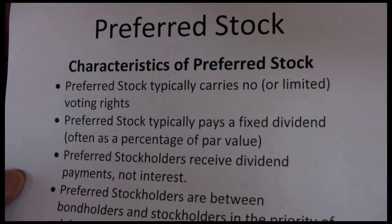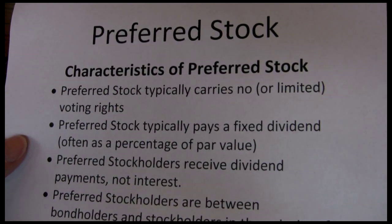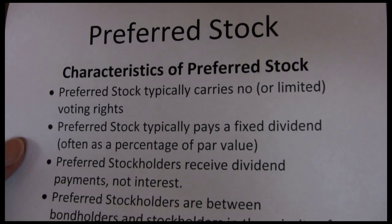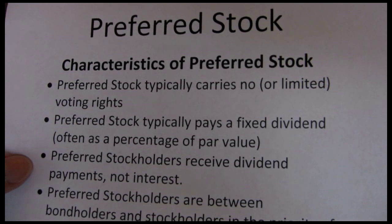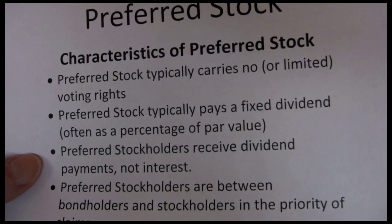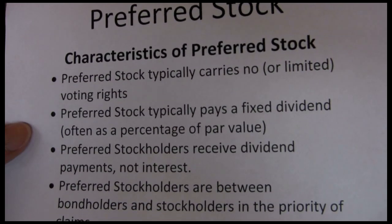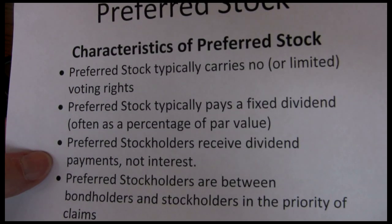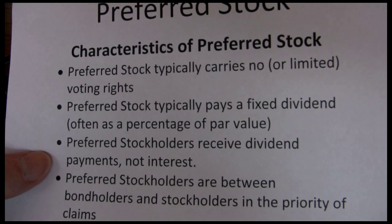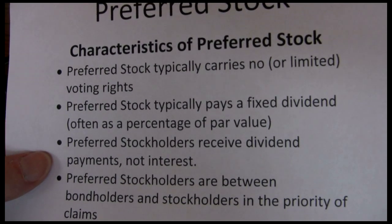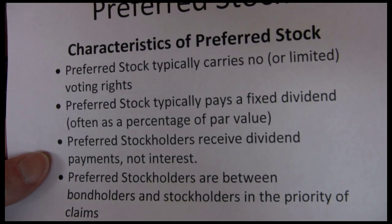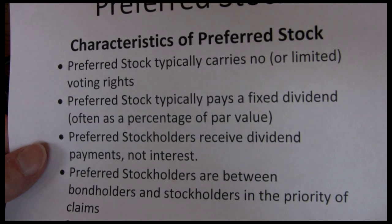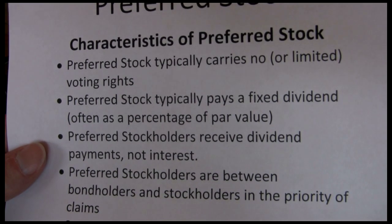On the flip side, preferred stock offers a more reliable dividend stream, more predictable, so you're making a lower risk, lower rate of return investment. Preferred stockholders receive dividend payments, not interest. The fixed dividends are kind of like the fixed coupons associated with bonds, but the dividend payments are not guaranteed like the coupon payments on bonds. A company that is struggling financially may skip preferred stock dividends, and that will not force them into bankruptcy. So they don't have quite the reliability or safety of the coupon payments of bonds.